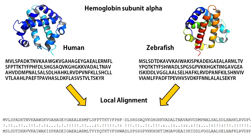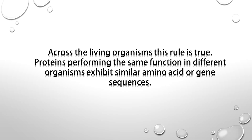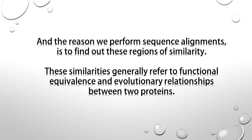Now see the results. The two sequences are written horizontally and their identities and similarities are marked as vertical lines and dots respectively. In summary, the two sequences are highly similar. Across living organisms, this rule is true: proteins performing the same function in different organisms exhibit similar amino acid or gene sequences. And the reason we perform sequence alignments is to find out these regions of similarity, which refer to functional equivalence and evolutionary relationships between different proteins.